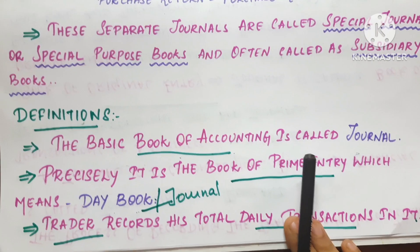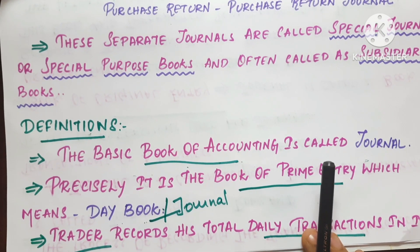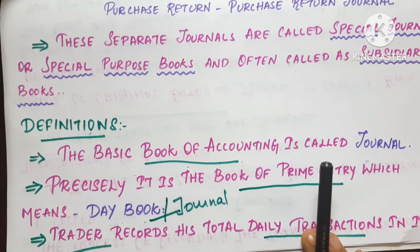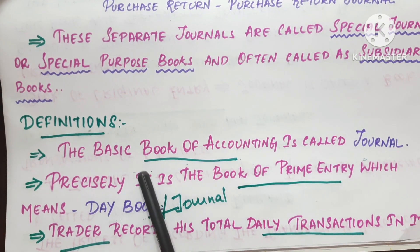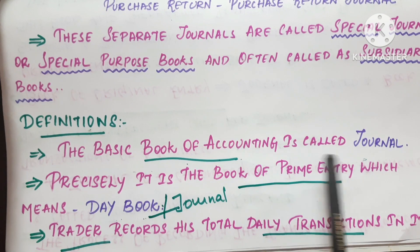First, we will see the theory. The definition of journal: it is the basic book of accounting. This is the journal.